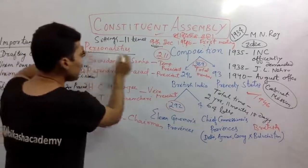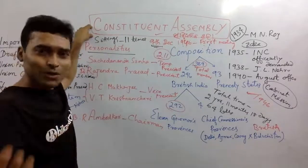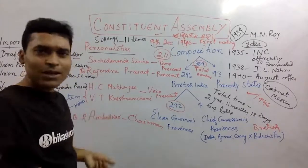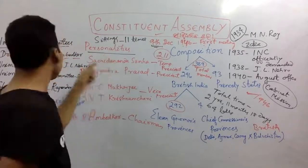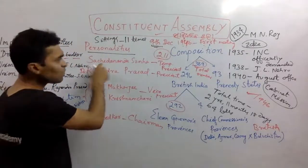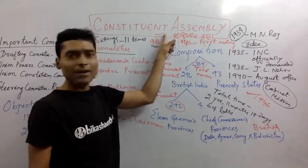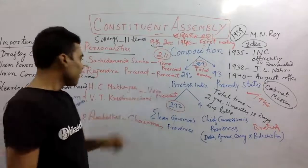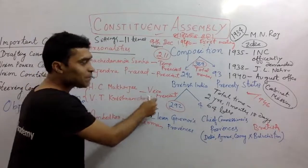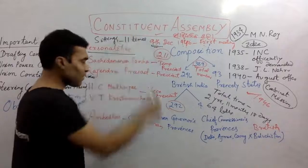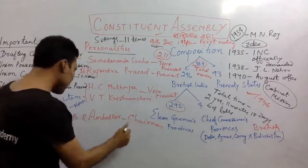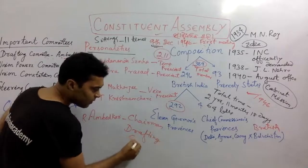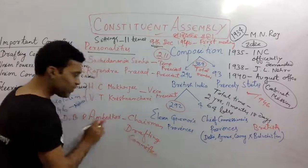If you have heard of important personalities in the Constituent Assembly, you can see personalities like Ambedkar, Sachchidananda Sinha, Rajendra Prasad — all of them. He was a temporary president. He was also a former president. S.C. Mukherjee and V.T. Krishna were part of the drafting committee. The drafting committee worked towards the chairman of the nation.